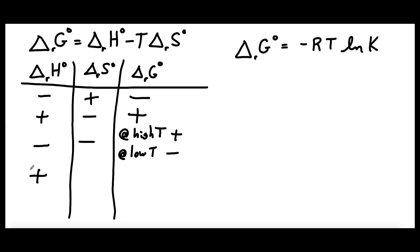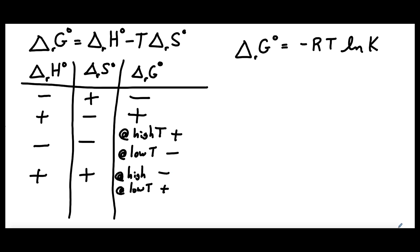The reverse will be true for an endothermic reaction with a positive delta S standard. At very low temperatures, the entropy term doesn't matter at all and all we have is the unfavorable positive delta H term, so the reaction is not favorable. But at a high enough temperature, we have a large positive delta S standard, which creates a large negative entropy term that outweighs the positive delta H term. So at high temperature we have a favorable reaction with a negative delta G standard. When we use this language of favorable or unfavorable, we're not talking about spontaneity — we're talking about whether the reaction has a favorable equilibrium constant.